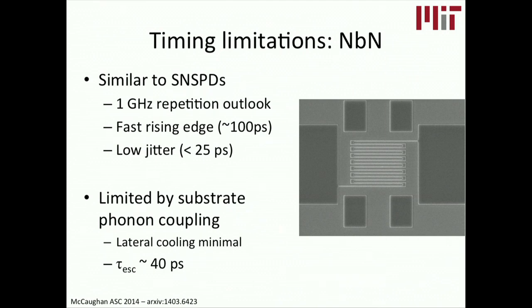Because this is an electrothermal effect, and specifically a thermal effect, we do expect there to be some timing limitations. We took a look at what those limitations would be for the material that we're currently using, which is niobium nitride. And we see a similar speed outlook to what we get out of our single photon detectors that are similarly made on the same material. And we sort of see this as about a one gigahertz outlook.